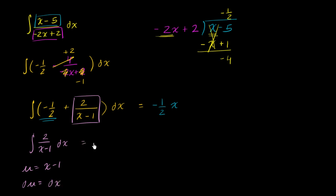We can rewrite this in terms of u as 2 times the integral of 1 over u du, which we know is 2 times the natural log of the absolute value of u plus C. In this case, u is x minus 1, so this equals 2 times the natural log of x minus 1 plus C.